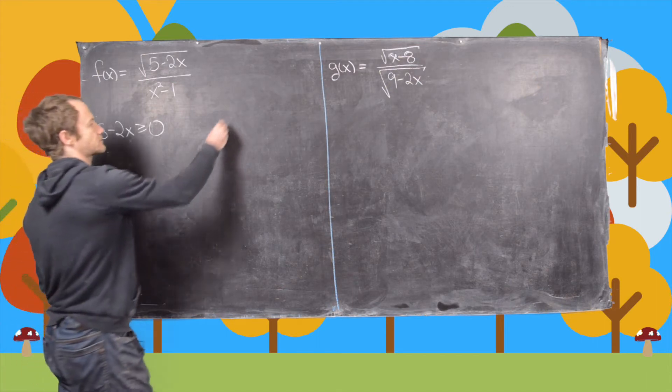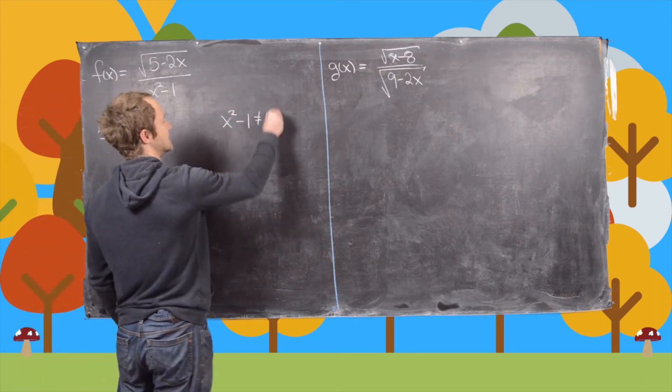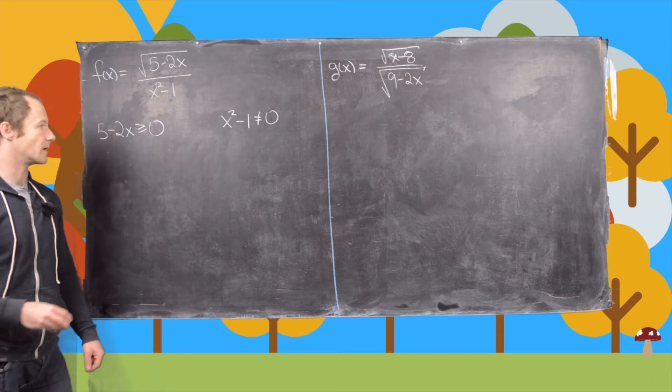Now let's look at this. We want to make sure that x squared minus 1 is not equal to zero.